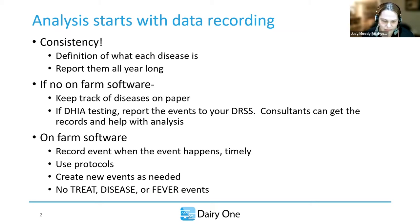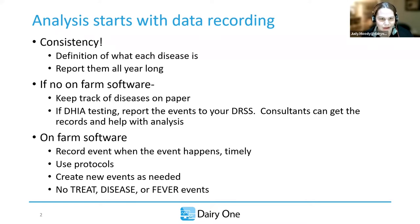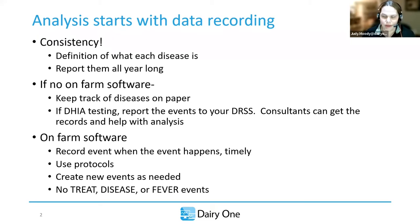Asking farmers over the years: what is an RP? And you get answers — it's after 12 hours, 24, 48 hours. What does it mean when a cow has metritis? Each of these is going to be a farm-dependent answer. And that's what makes benchmarking really hard when we start looking at how your dairy compares to the dairy next door.